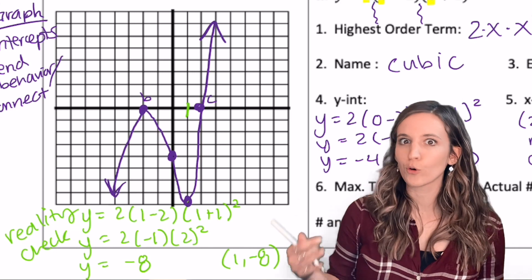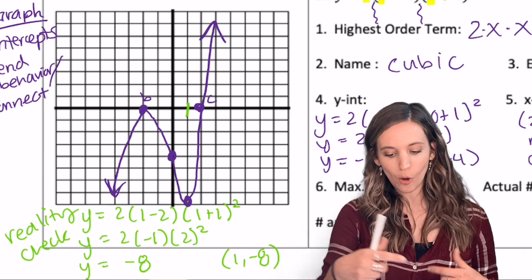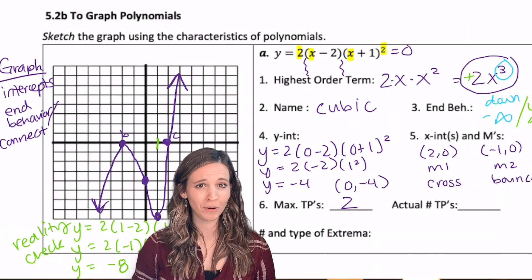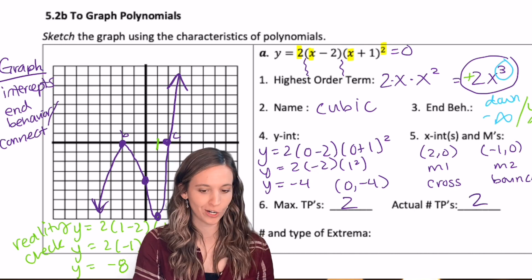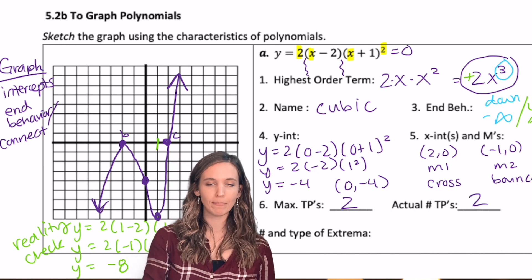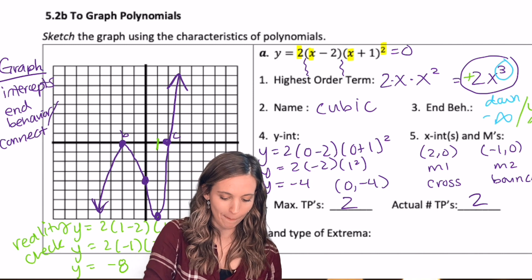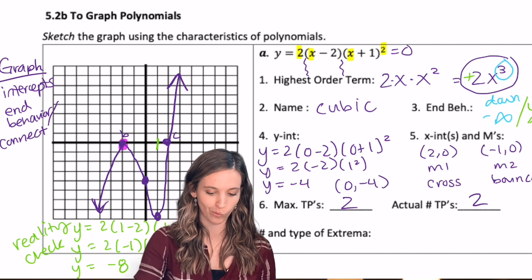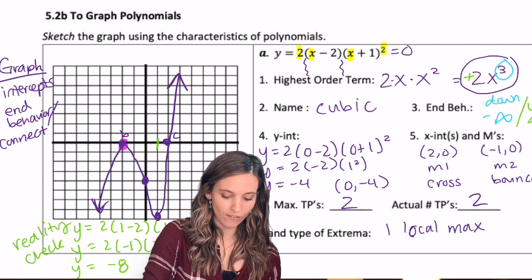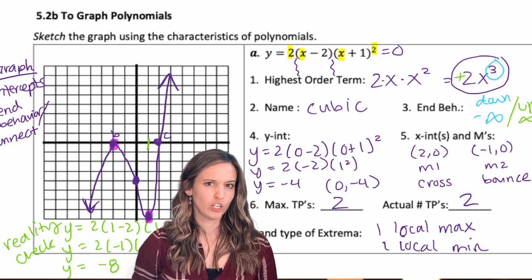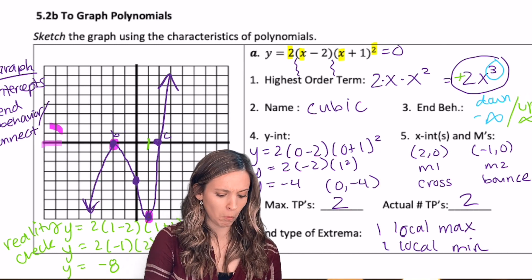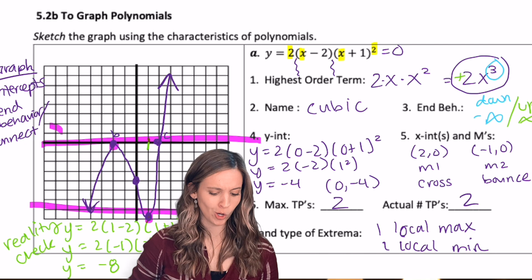Now that I have a pretty good sketch here, let's go back and finish up actual number of turning points. I have one, two, so two turning points, and then number and type of extrema. Well, let's check this out. I got a max, a local max right there. And then I also have a local min right here. Do we have an absolute? No ceiling, no floor. Nope.